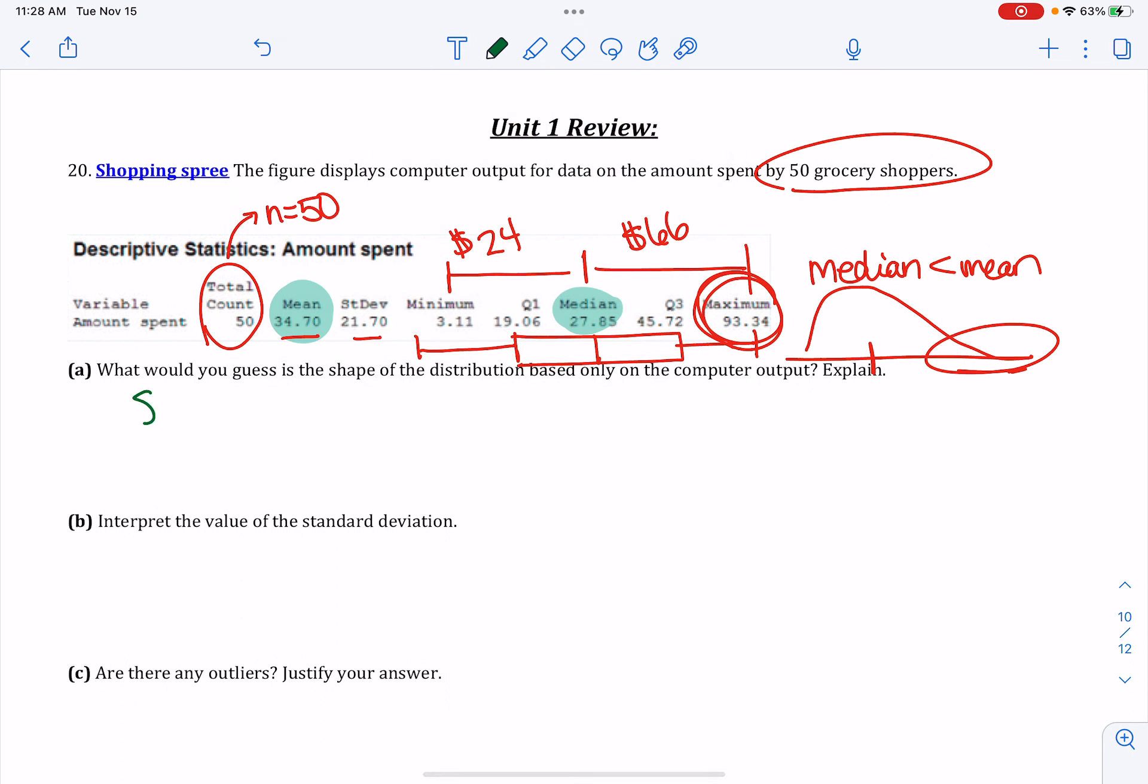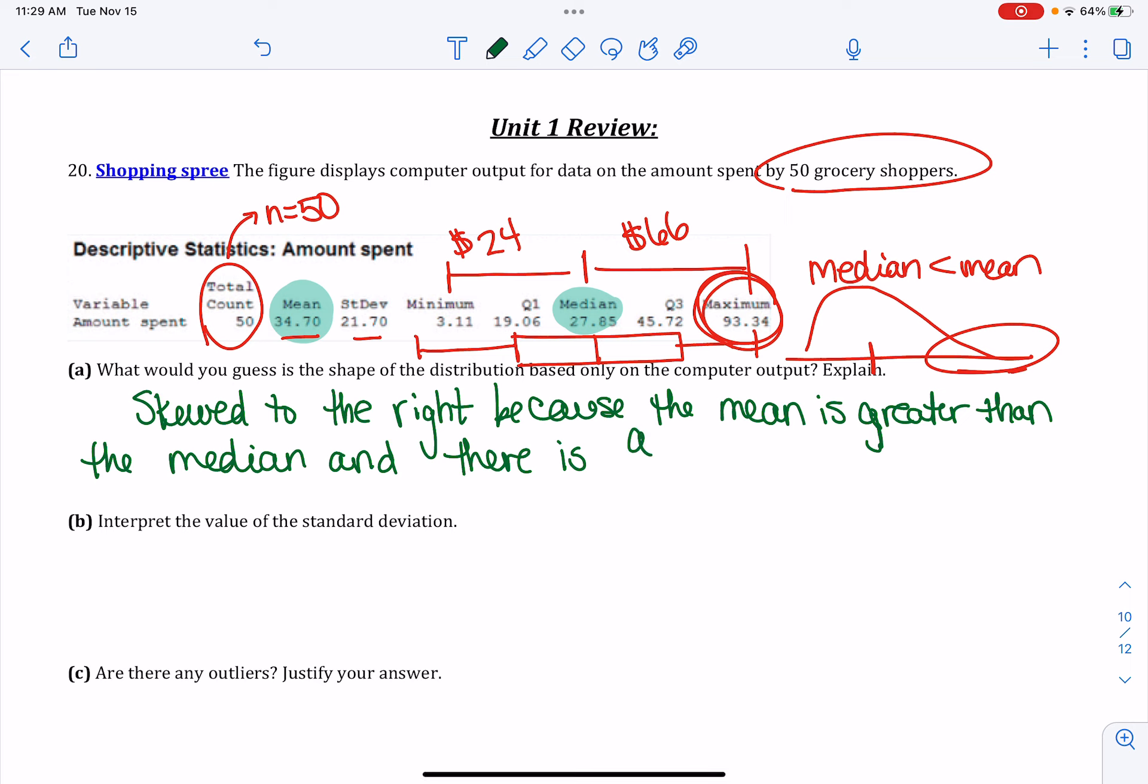Okay, so skewed to the right, because the mean is greater than the median. And there is a lot more variability from median to maximum than minimum to median. So those are a couple of hints. I think on your answer key, it just talked about like Q3 is much farther than Q1, or the mean is much larger than the median. Again, there's different ways you can say that.